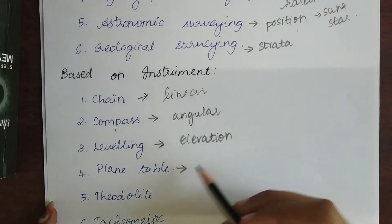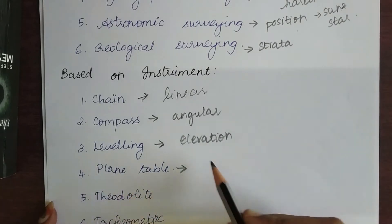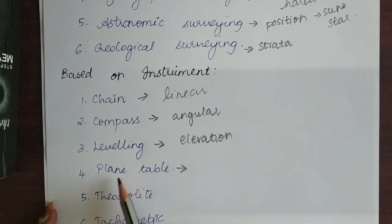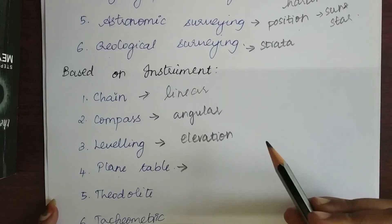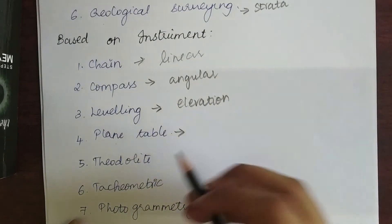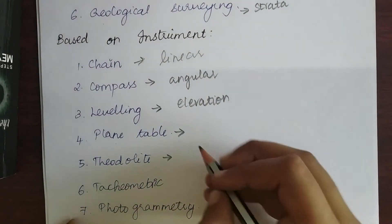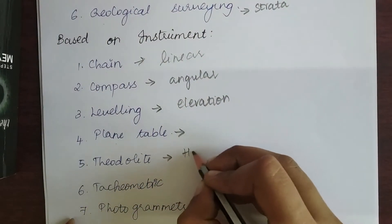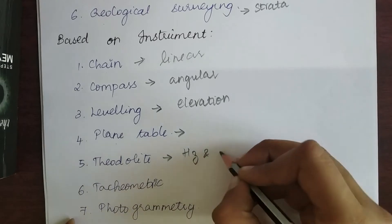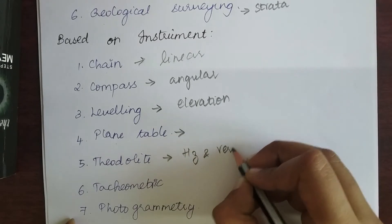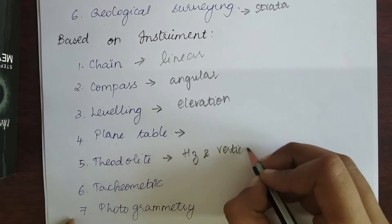Next is theodolite. Theodolite is used to find both the horizontal and vertical angles.